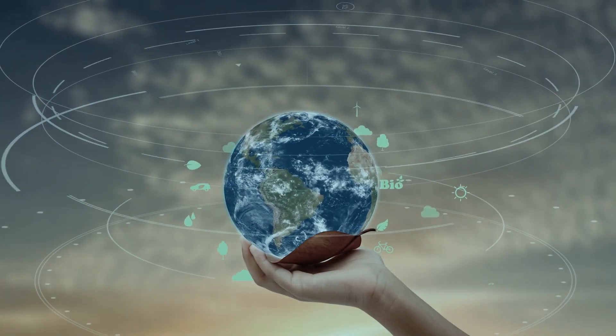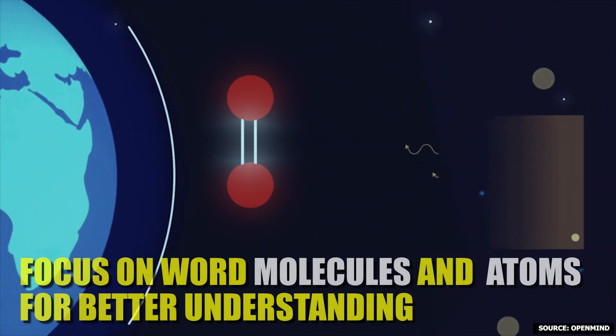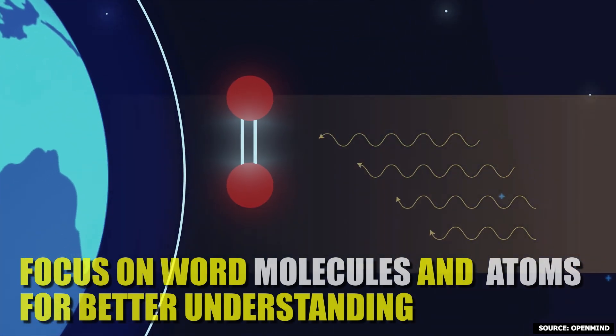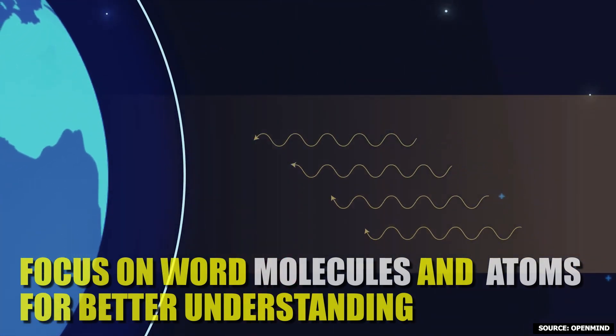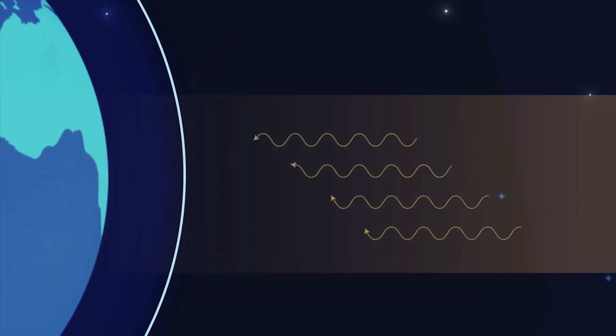Despite its minimal concentration, the ozone layer plays a monumental role in Earth's well-being. Its genesis is a captivating dance of molecules. Sun's ultraviolet radiation strikes oxygen molecules, fragmenting them into individual oxygen atoms. As these solitary atoms then unite with oxygen molecules, ozone is birthed. The reaction can be simply put as O2 plus O equals O3.